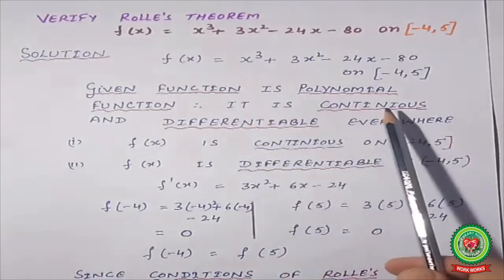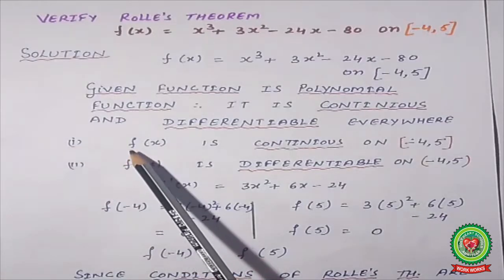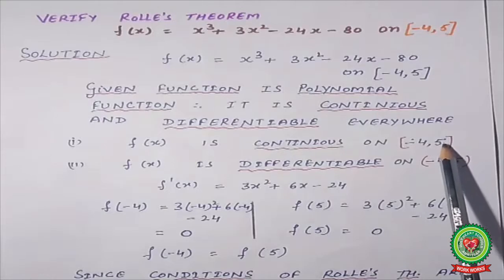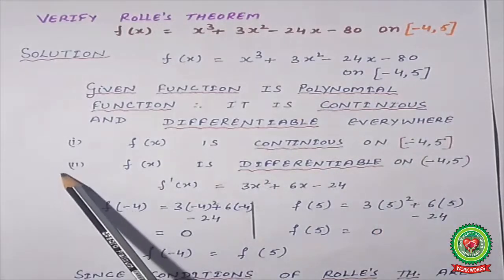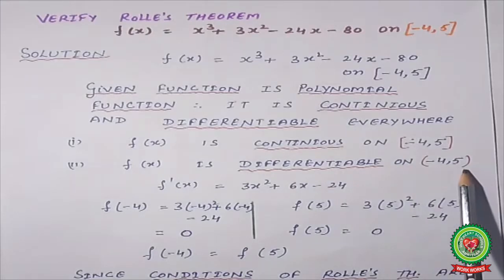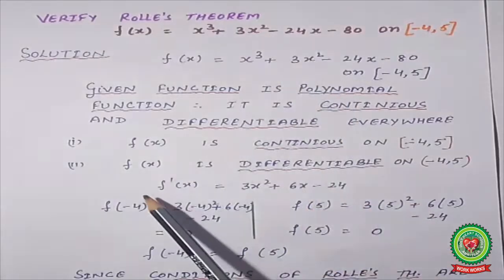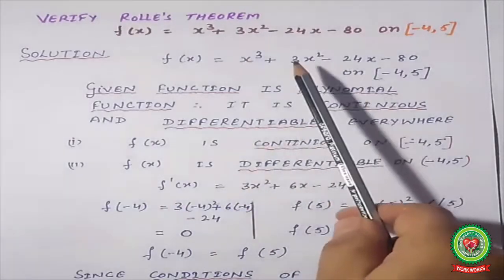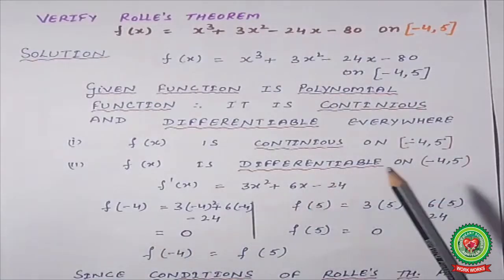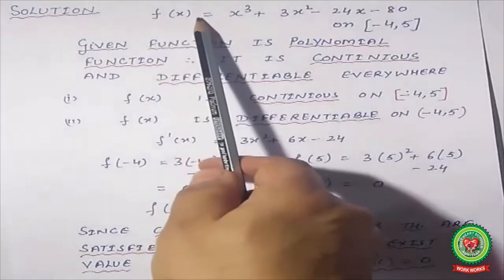Therefore, the first condition: f(x) is continuous on the closed interval as given. The second condition: f(x) is differentiable on the open interval (−4, 5). Now we find the differentiation: the derivative of x³ + 3x² − 24x is 3x² + 6x − 24.